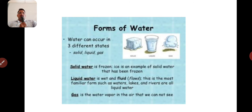Now we will see the forms of water. There are three forms of water. It means form means state. Solid, liquid, and gases.